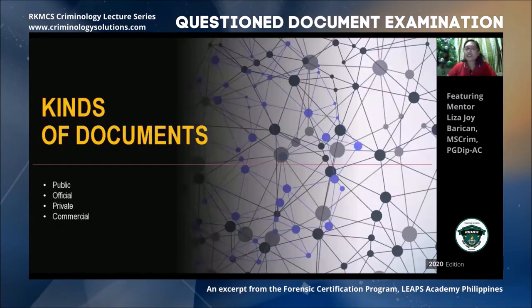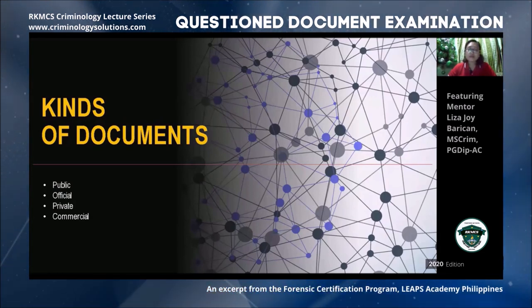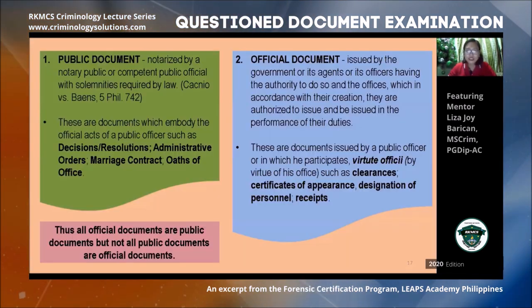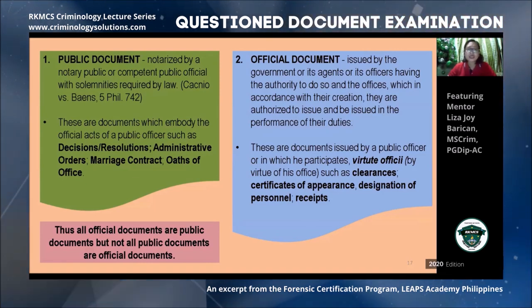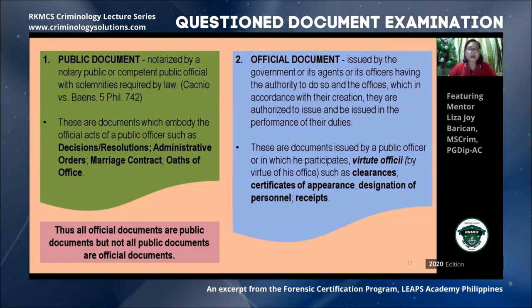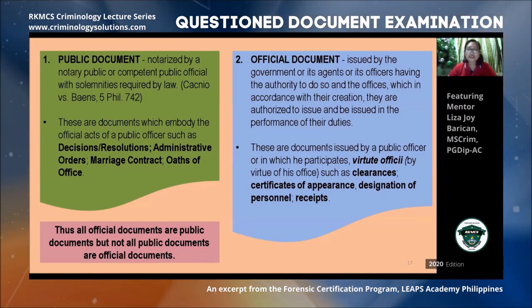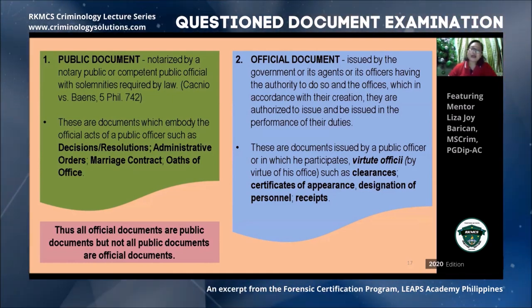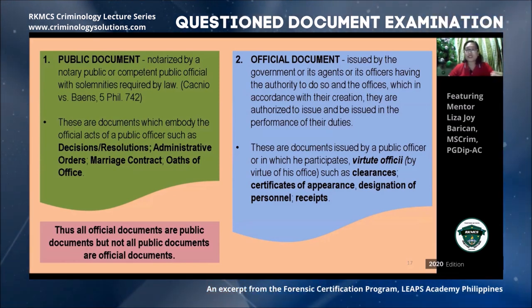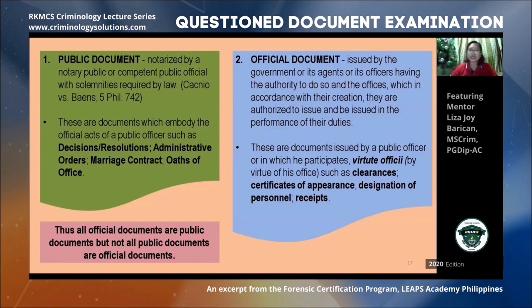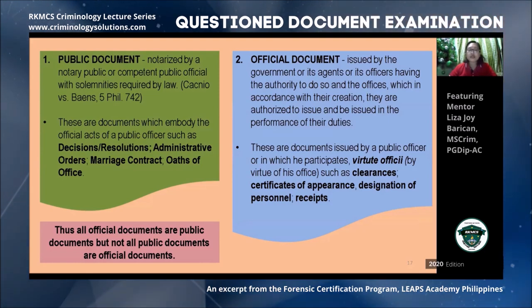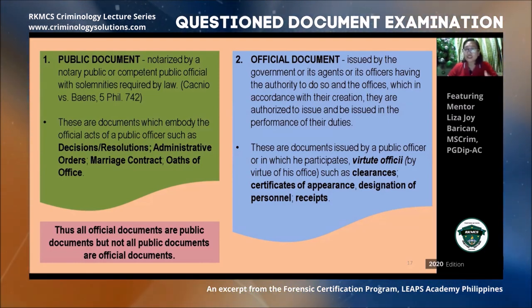Next, let's go to the kinds of documents. There are four kinds: public, official, private, and commercial documents. A public document is one that is notarized by a notary public or competent public official with the solemnities required by law — meaning the document has been notarized by a lawyer, making its contents public. Examples include decisions or resolutions, administrative orders, marriage contracts, and affidavits of loss — once notarized, an affidavit becomes a public document.